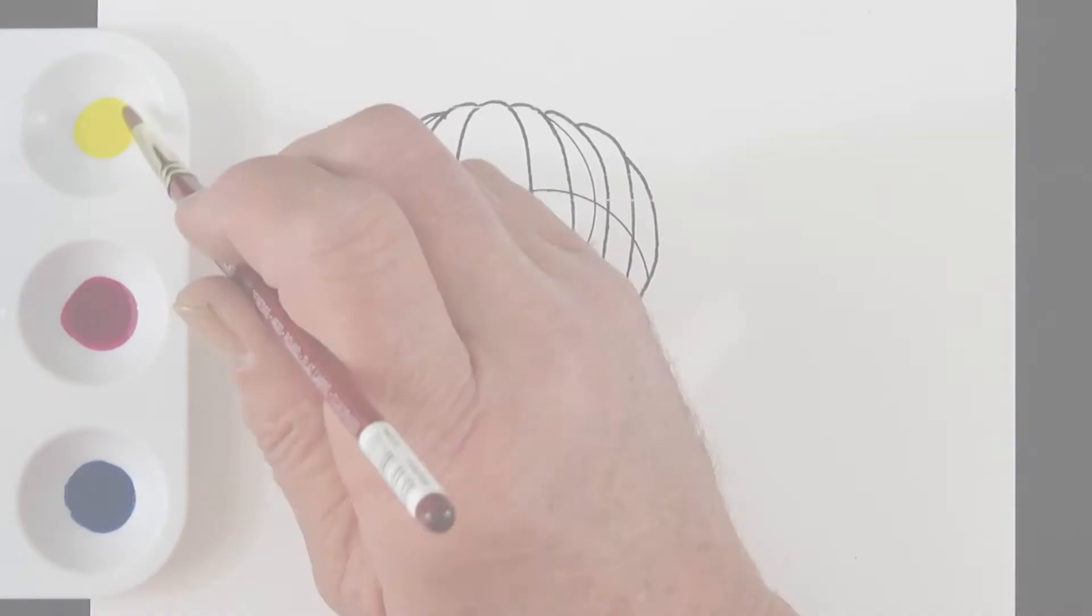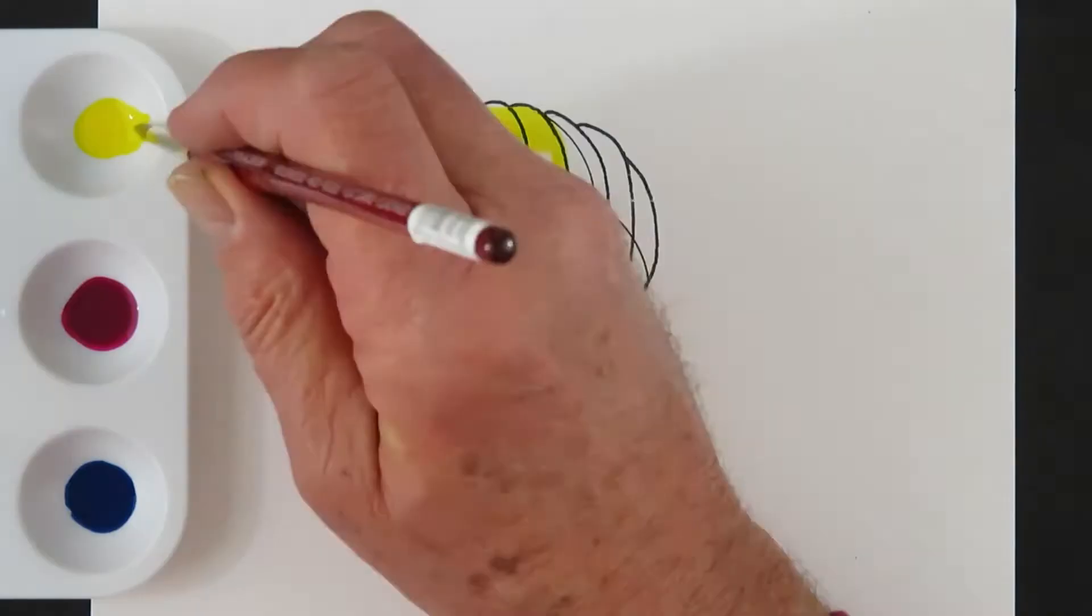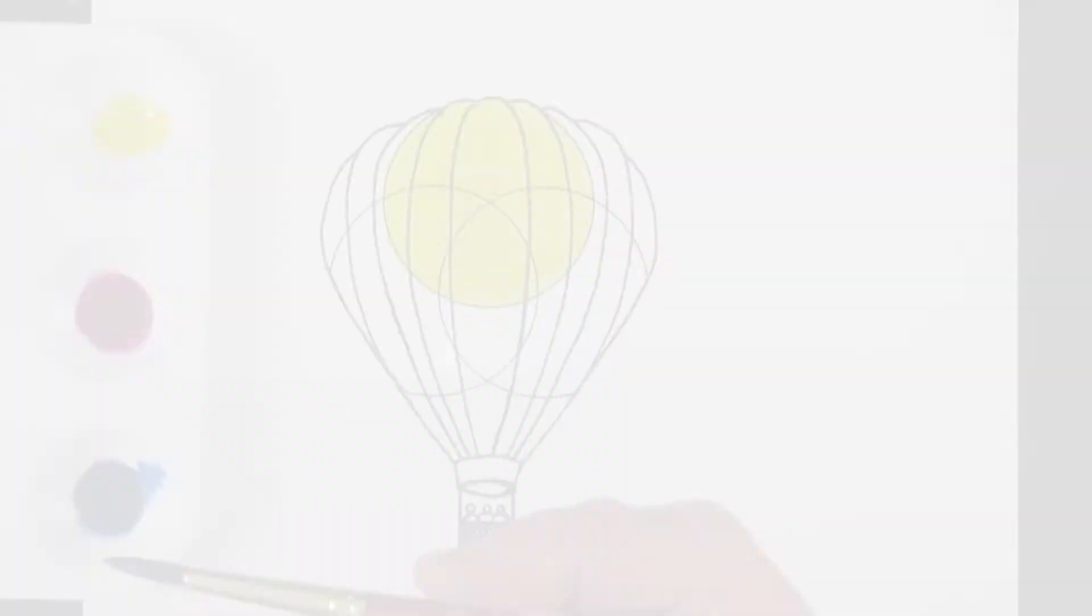Dip your brush into the process yellow, and we're going to fill in this first circle. With a clean brush, we're next going to add the process cyan to the circle on the left.